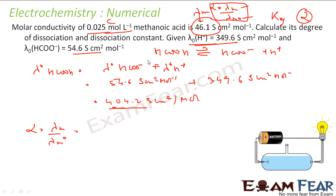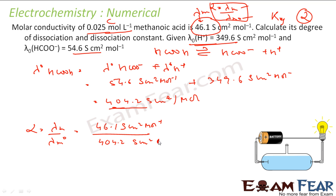Since λm is 46.1 and λm⁰ is 404.2 S·cm²/mol (same units, so straightforward), α = 46.1 / 404.2 = 0.114.